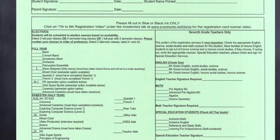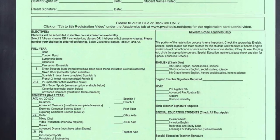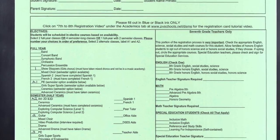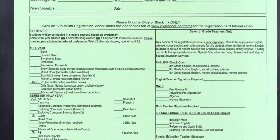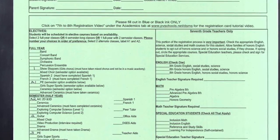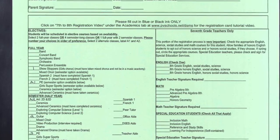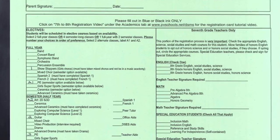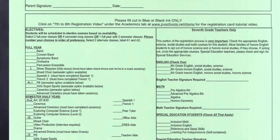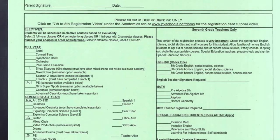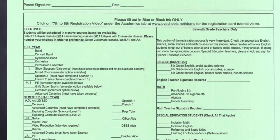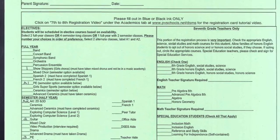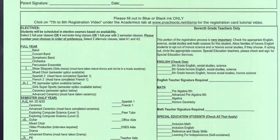Moving back to the card, look at the example here of choices that I might have made for classes. You will need to rank order your classes beginning with number 1 up to a possible number 4 if you choose all semester classes. In this example, I chose Showstoppers, which is a full year class, as my number 1 choice. For my second choice, I chose guitar which is a semester course. And for my third choice, I chose PE for one semester. As alternates, I labeled them A1 and A2.